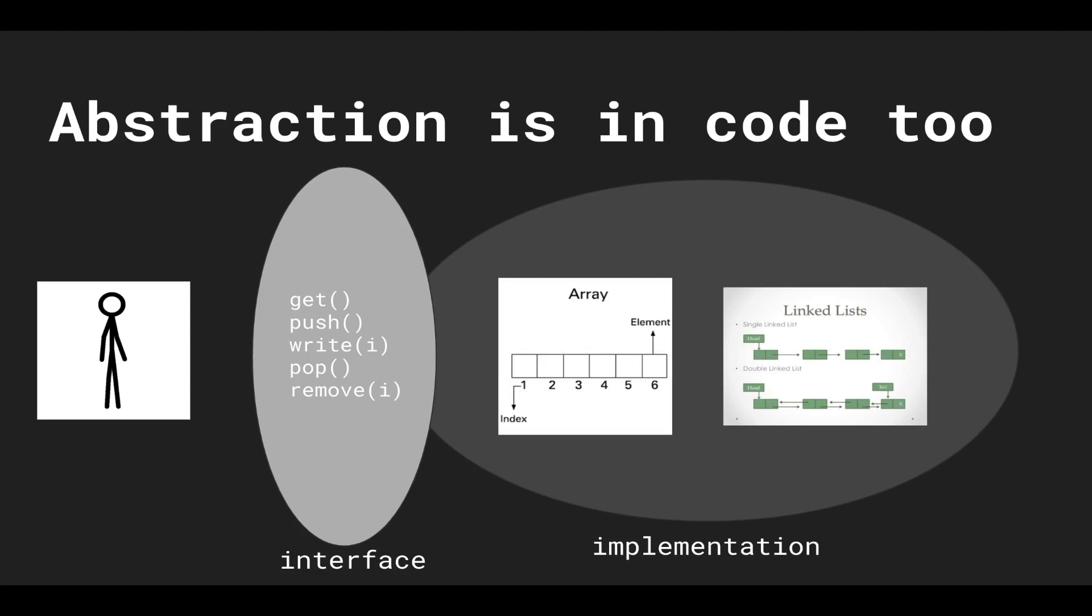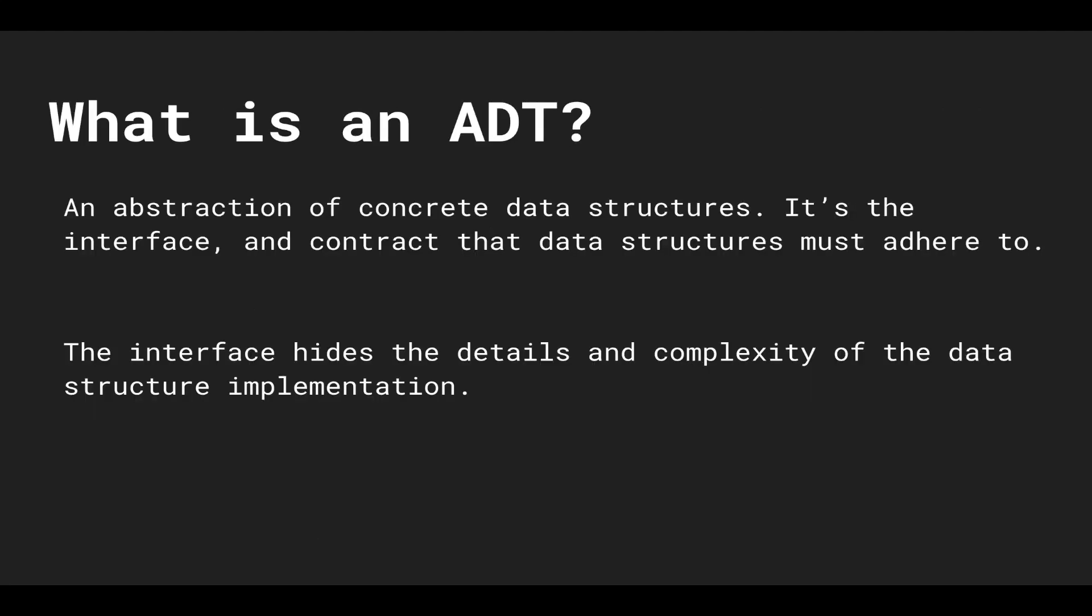A data structure is the implementation for an abstract data type. So going to the next slide to make it a bit more concrete, an abstraction of concrete data structures. That's what an abstract data type is. It is a thing that hides the complexity of concrete data structures.